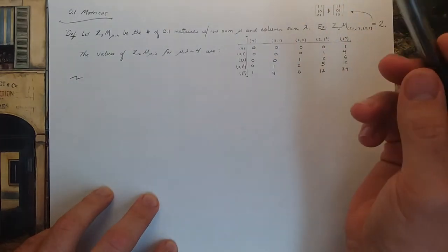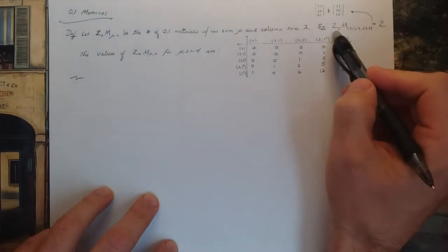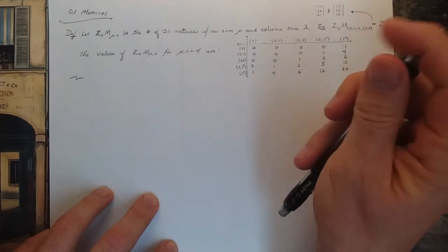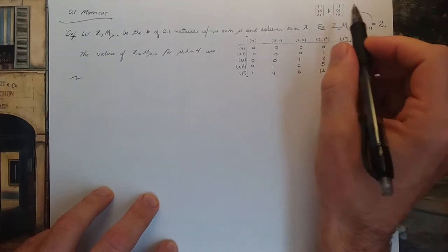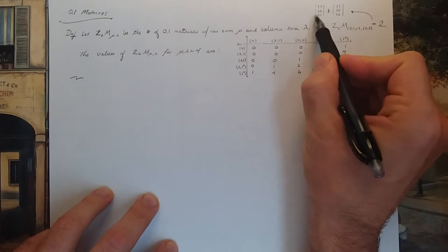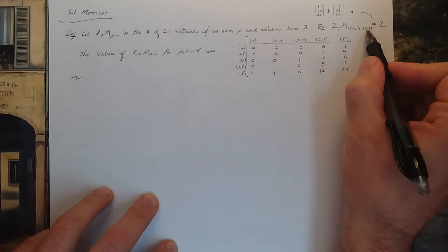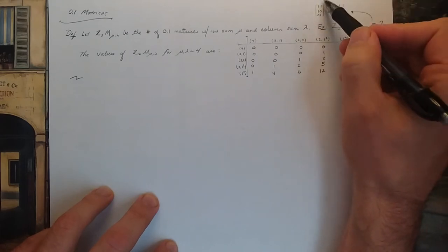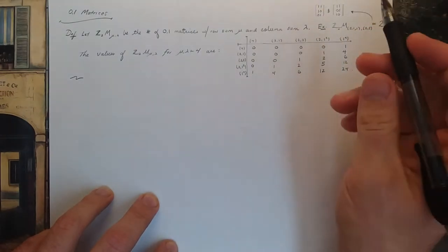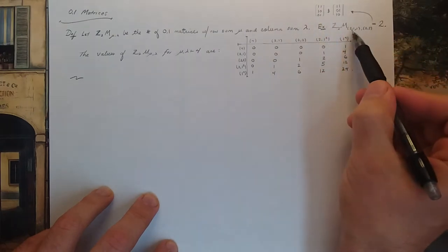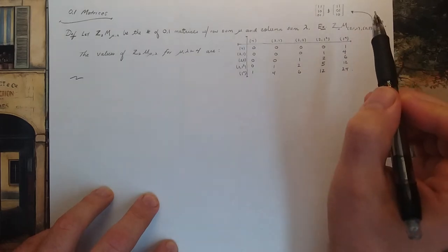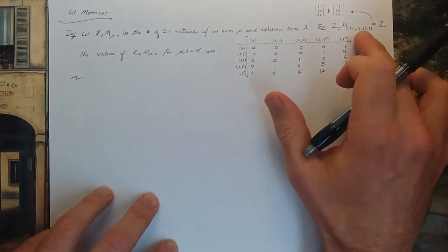Here I have written down the two possible 0,1 matrices with row sum 2,1,1 — if you add the rows you get 2,1,1 — and column sum 2,2 — if you add the columns you get 2,2. It turns out there are only two ways to construct a 0,1 matrix with row sum 2,1,1 and column sum 2,2, so this number is 2.